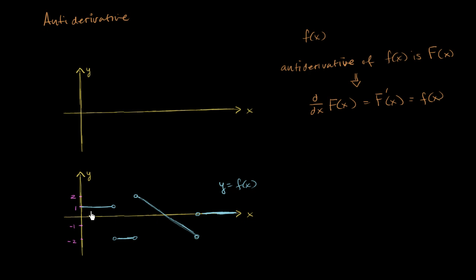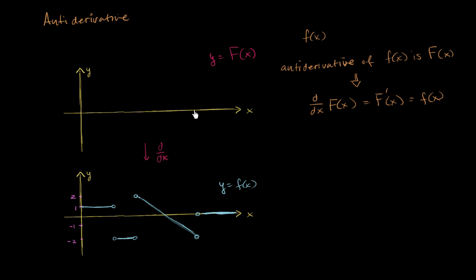So what we're going to try to do here is we have our f of x, and we're going to try to think about what's a possible function that this could be the derivative of. You're going to study this in much more depth when you start looking at integral calculus. There are actually many possible functions that this could be the derivative of, and our goal in this video is just to draw a reasonable possibility. So let's draw y is equal to capital F of x — a function where its derivative could look like this.